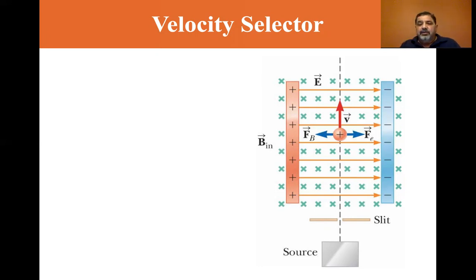So it can go through the slit, it can go through the velocity selector, if it's going at the right velocity.